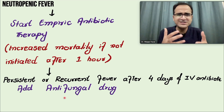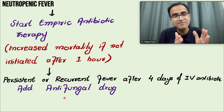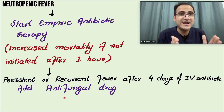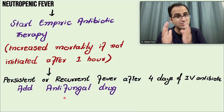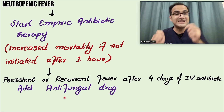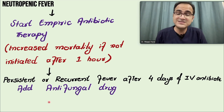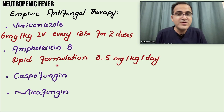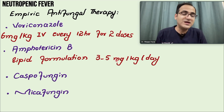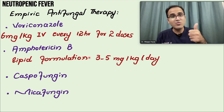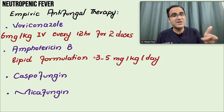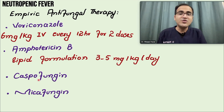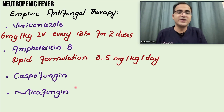Immunocompromised patients commonly develop fungal infections and must be treated with antifungals. Options include voriconazole 6 mg/kg IV every 12 hours for two doses, amphotericin B lipid formulation 3–5 mg/kg per day (monitoring potassium for hypokalemia and monitoring renal function), caspofungin, or micafungin. One of these antifungal therapies must be added on day four if fever is not subsiding.